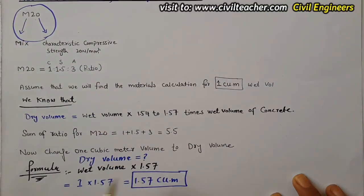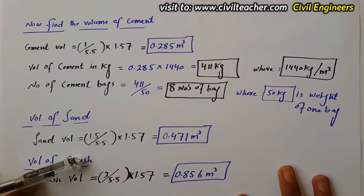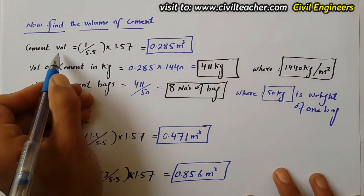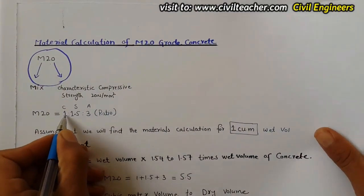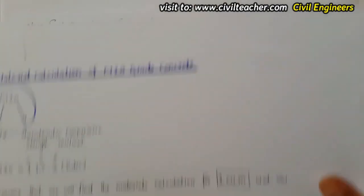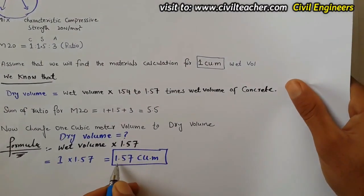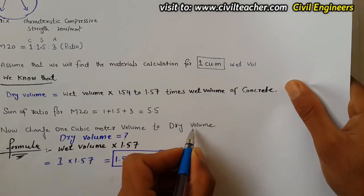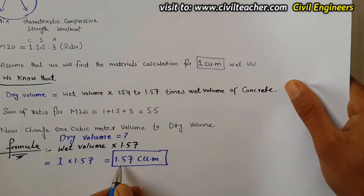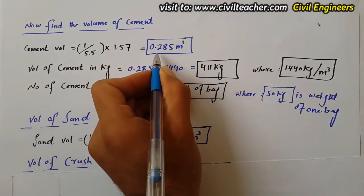Now find the volume of cement. Cement volume equals (cement ratio / sum of ratio) × dry volume, which is 1 divided by 5.5 multiplied by 1.57. Here 1 is the cement ratio, 5.5 is the sum of ratio, and 1.57 is the dry volume. Calculating this gives 0.285 cubic meters.